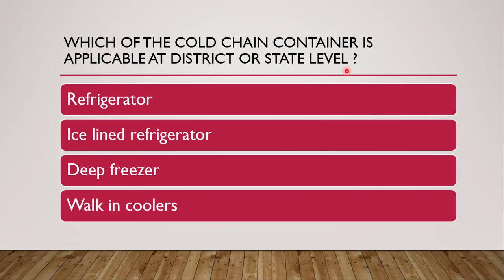Cold chain containers include vaccine carriers or thermocoil boxes, refrigerators, ice-lined refrigerators, freezers, and walk-in coolers. According to the size and requirement, they have divided cold chain container capacity into levels — district or state level, country level, and primary health centers each have different requirements. So which container is used at district or state level — whether it is refrigerator, ice-lined refrigerator, deep freezer, or walk-in cooler?